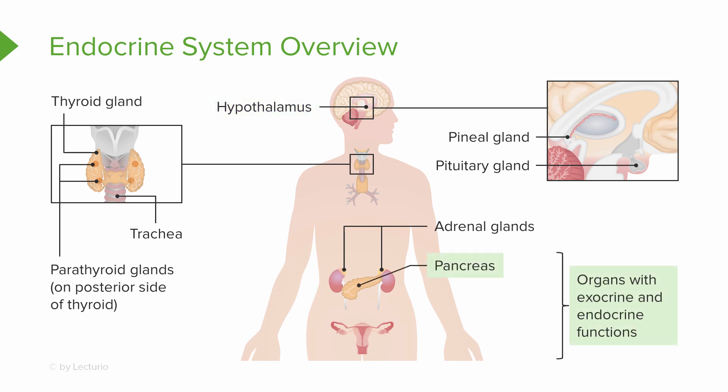Some organs also have both exocrine and endocrine functions. This includes the pancreas, which secretes insulin but also produces exocrine secretions. We also have the gonads — the testes in males and the ovaries in females. In a pregnant woman, the placenta has both exocrine and endocrine functions as well.